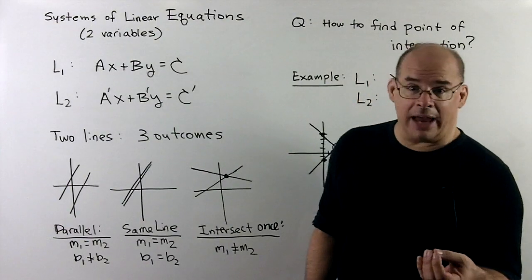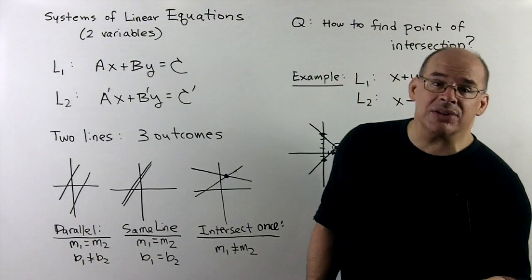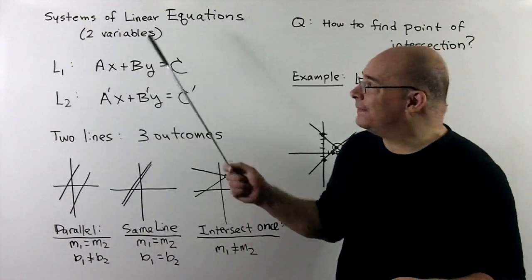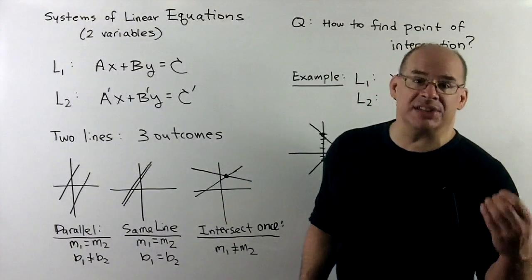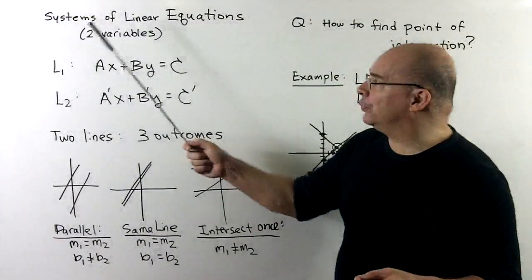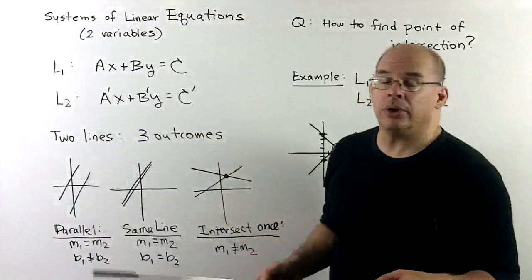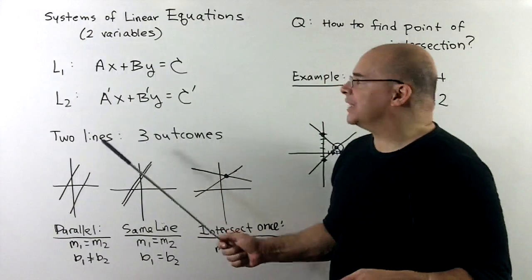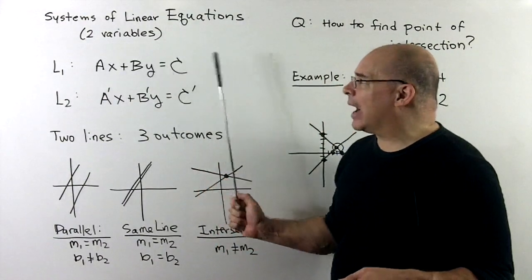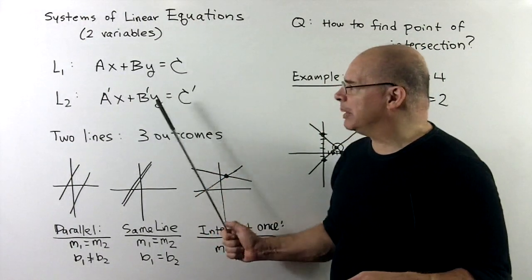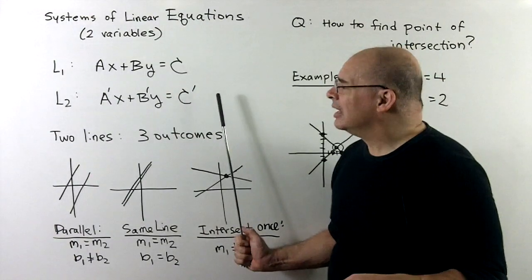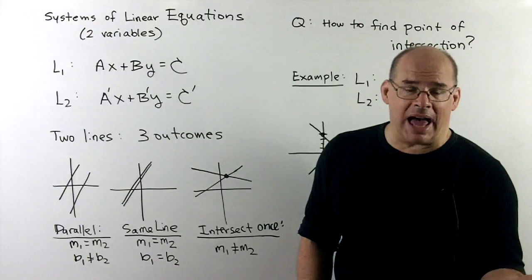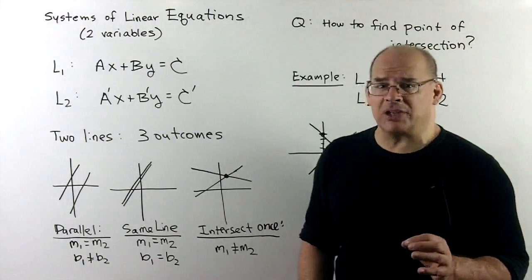With the theory of a single line, we can now consider what happens when we have two lines in the plane. The fancy name for this is solving systems of linear equations in two variables. For our setup, we'll have two lines, L1 and L2, given as Ax plus By equal to C, and A prime x plus B prime y equal to C prime. These are given in standard form. We don't want to rule out vertical lines, so we save y equals mx plus b for later.